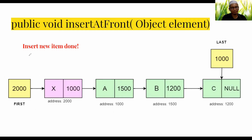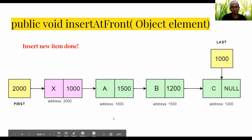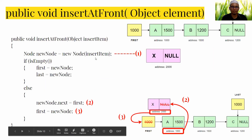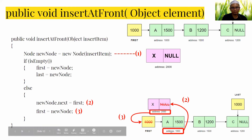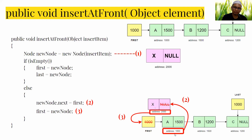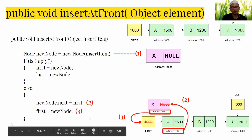To wrap up, inserting at the front involves three steps: first, create a new node; second, assign the address of the current first node to the new node's next pointer; third, copy the new node's address into first so that first now points to the new first node.